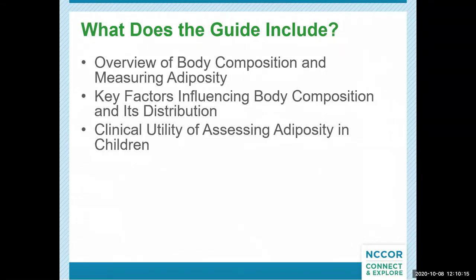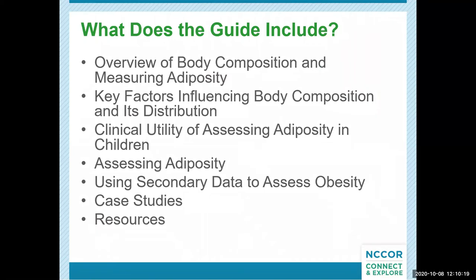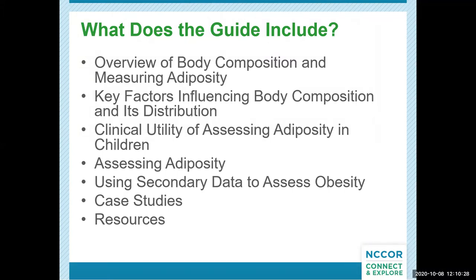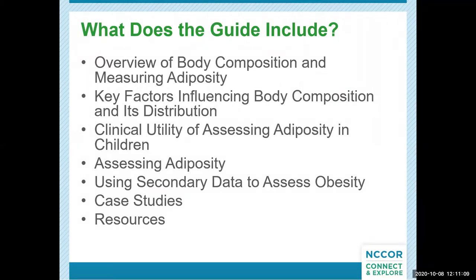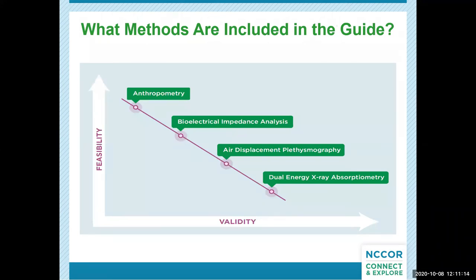This next slide highlights the sections you'll find in the guide. As a user reads through the guide, they're going to learn about the importance of assessing childhood adiposity, the factors that influence it, and the clinical utility of assessing it. The section on assessing adiposity will walk users through the use of each method along with its strengths and limitations. The case studies section shares six real-world examples of assessing adiposity in a variety of settings. Throughout the guide there are links to resources, and all information on the slides was pulled from the user guide, so you can find specific details and references there.